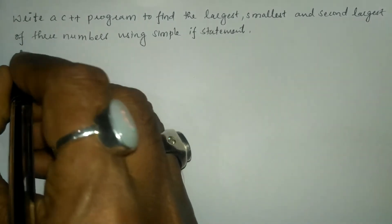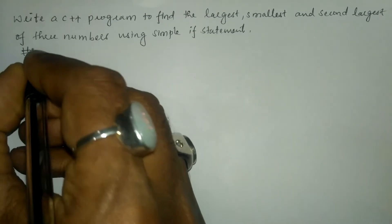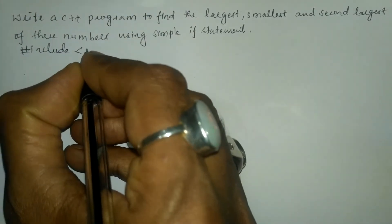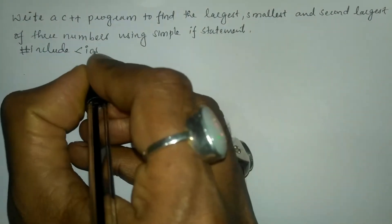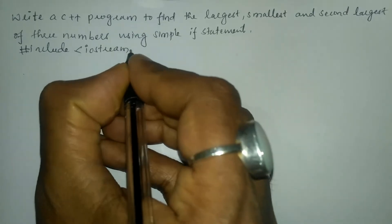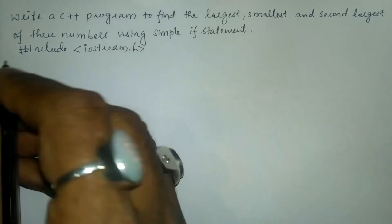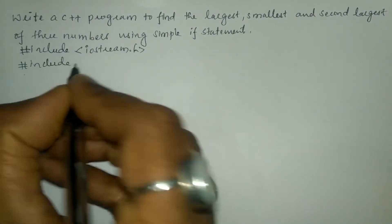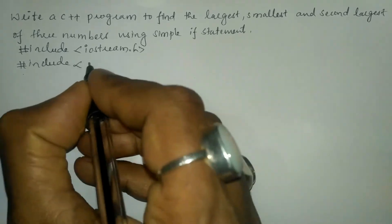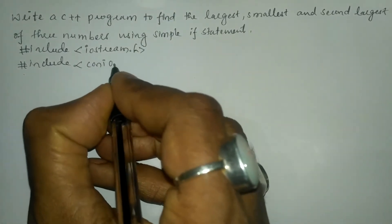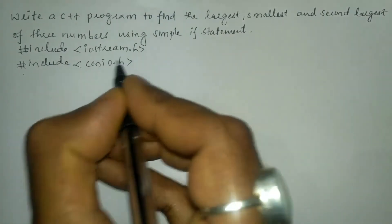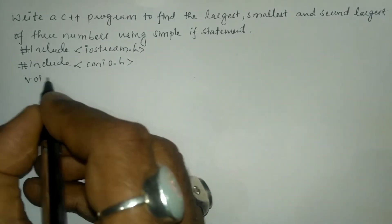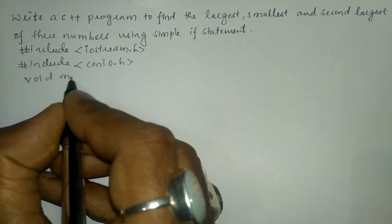Let us write the preprocessor directives: hash include in angle brackets iostream.h header file. The next preprocessor directive is hash include in angle brackets conio.h header file. Now we are going to write the void main function with a curly open brace.